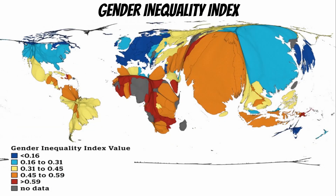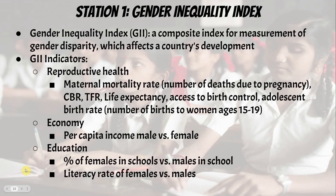How does this relate to women? If you know how women are treated, you can probably tell if it's a developed or less developed country — if women are treated very well, you're likely in a more developed country; if poorly, less developed. We can see this in the gender inequality index cartogram. Places closest to zero have the least difference between male and female treatment. The more blue a country is, the more equality exists; the warmer the colors, the less equality. The GII looks at mortality rates, CBR, TFR, life expectancy, access to birth control, income, and types of jobs women can have.